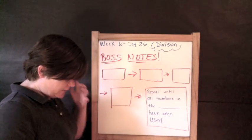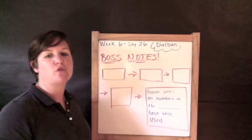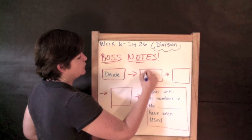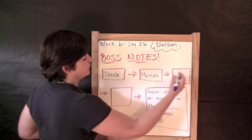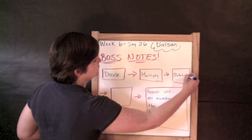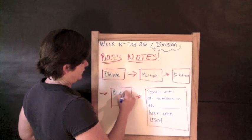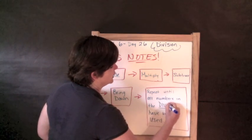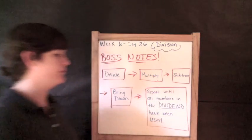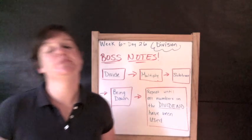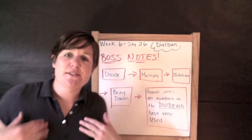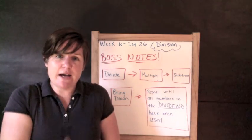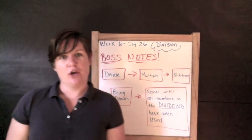For long division we repeat the same four steps over and over. Step one: divide. Step two: multiply. Step three: subtract. Step four: bring down the next digit. Repeat until all numbers in the dividend have been used. Here's a little rap to help you remember: divide, multiply, subtract, and bring down — divide, multiply, subtract, and bring it down!